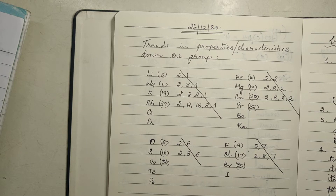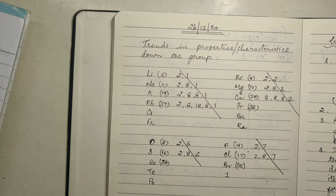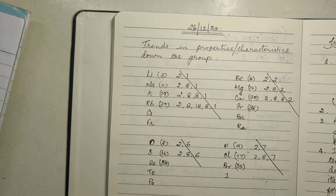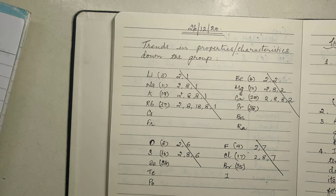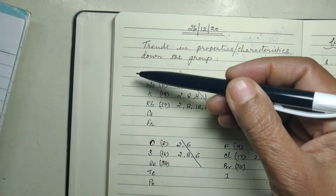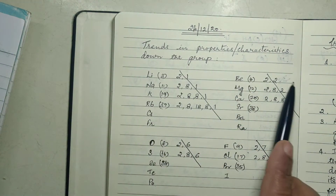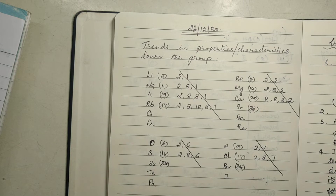We saw the modern periodic table and learned how to find the group number, period number, etc. Now we will see what are the trends in properties or characteristics down the group and across the period. Group means vertical columns, period means horizontal rows.